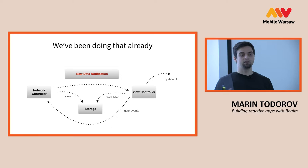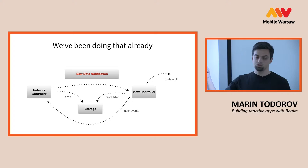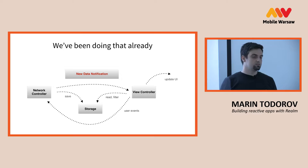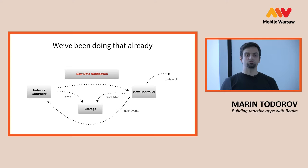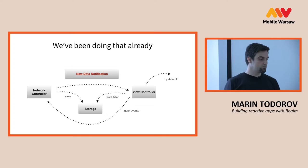A simple reactive mobile application might look something like this: you have a network controller that fetches JSON from the internet on a separate thread, saves all the data to some storage, and then sends a notification via the notification center. The view controller will receive this and know to pull the new data from storage. The reactive frameworks make it easier, safer, and maybe faster to write.